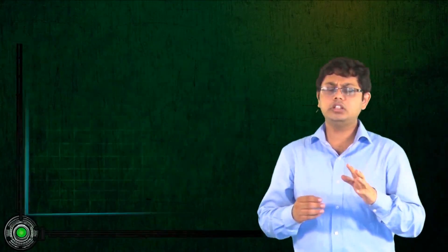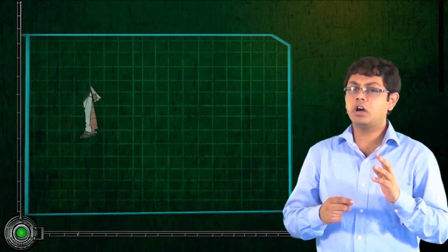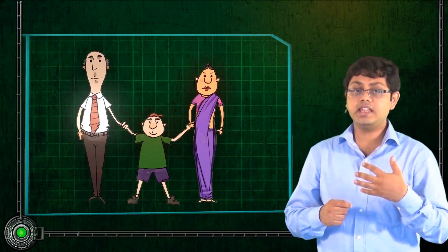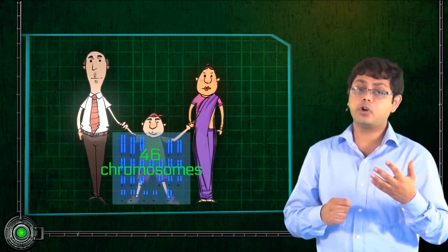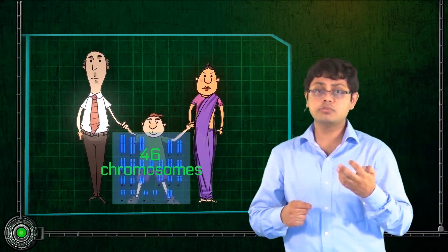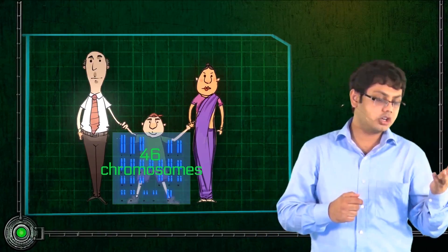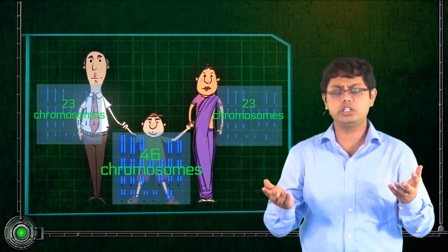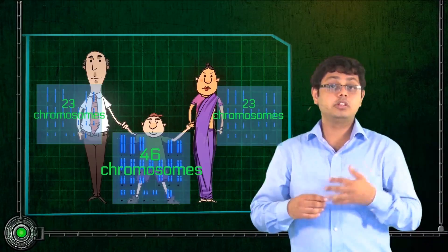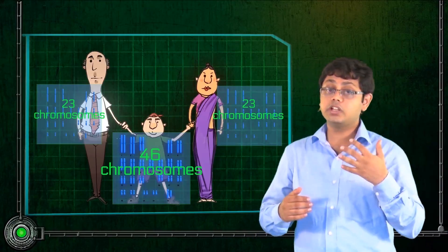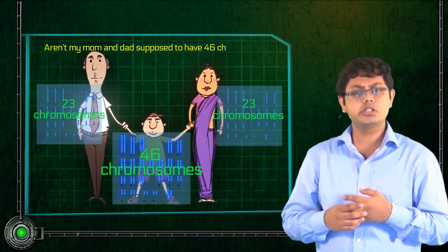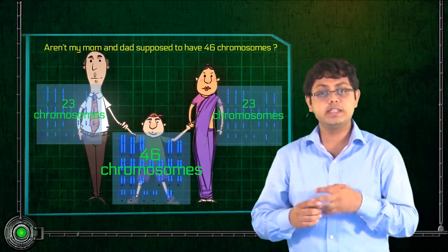This was fine until you actually consider what I said — that you and I are made out of 46 chromosomes, but your dad contributes 23 chromosomes while your mom contributes 23 chromosomes. The first question that comes to mind is: isn't your dad and your mom also supposed to have 46 chromosomes? Yes.